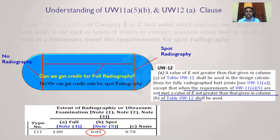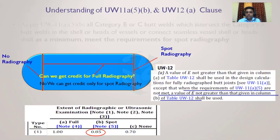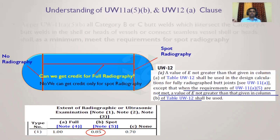The answer is no — we cannot get the full credit for the L-seam. We will take joint efficiency of 0.85 for the shell even though we are doing 100% radiography for that shell, because the circumferential joints (shell-to-head junctions) are not spot radiographed. If both sides were spot radiographed, the joint efficiency would be 1.